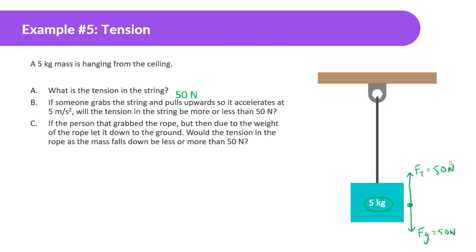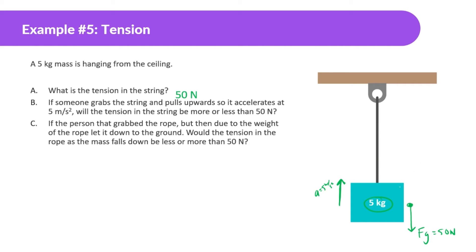Part B: if someone grabs the string and pulls upward so it accelerates at 5 meters per second squared, will the tension in the string be more or less than 50 newtons? If there's an upward acceleration, we should know that the force of tension needs to be more than the force of gravity. If it's accelerating up, the force of tension has to be more.